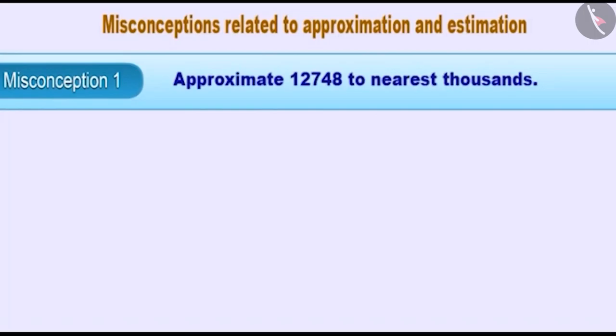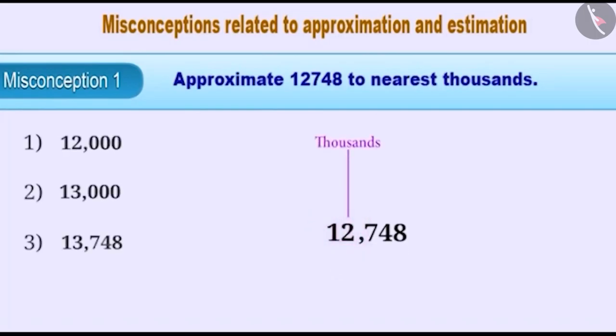Misconception 1: Approximate 12,748 to the nearest thousands. Many times, there is a misunderstanding that in order to approximate the thousands place, it is necessary to have 0 at the ones, tens, and hundreds place. This is incorrect.